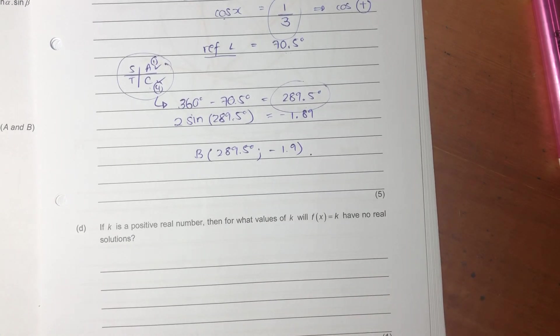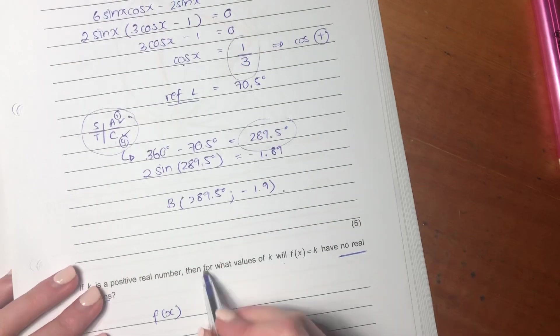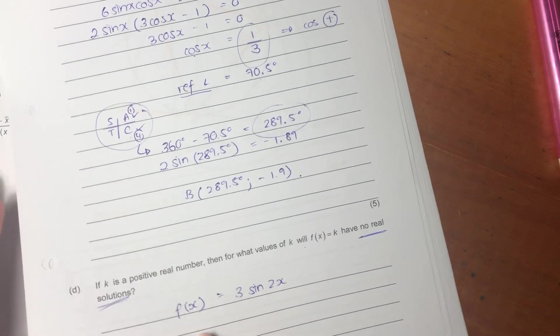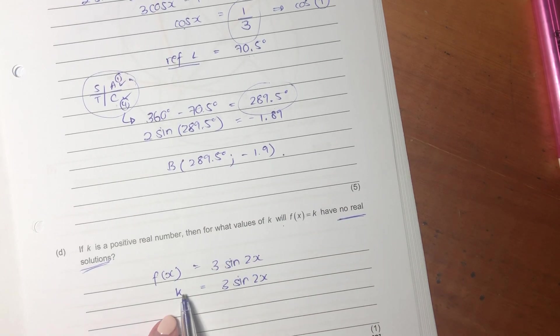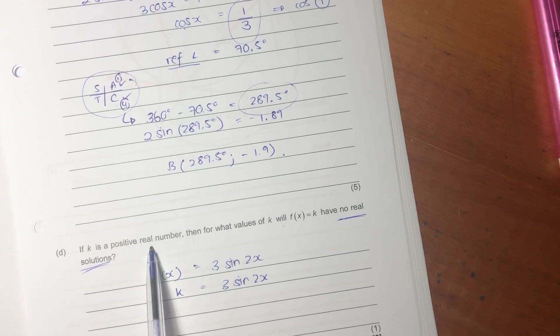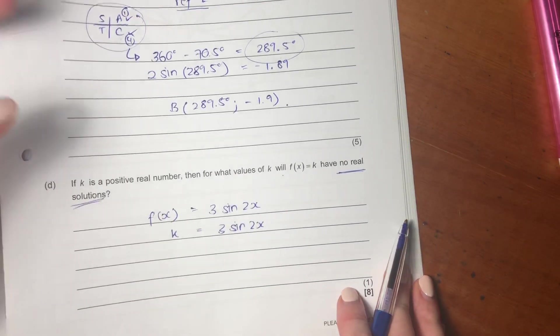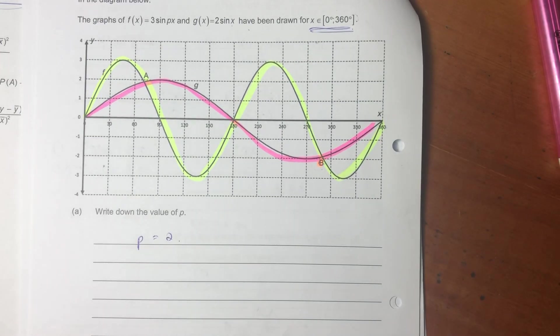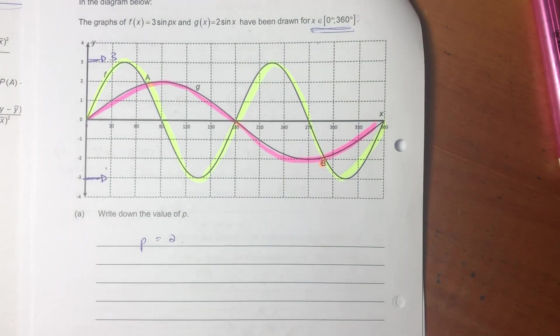Let's now move on to the last question of this question. It says, if k is a positive real number, then for what values of k will f of x equal k have no real solutions? So let's write f of x out so that we can familiarize ourselves with it again. So it's the 3 sine 2x. Now, it's saying if this equals k, what would k have to be, and it's a positive real number, for there to be no real solutions? Now, what this is testing you is it's basically saying, what are the bounds of this 3 sine 2x when it comes to y? So the bounds that we have here are negative 3 and 3. It doesn't go to 4 and it doesn't go to negative 4. It's between negative 3 and 3.